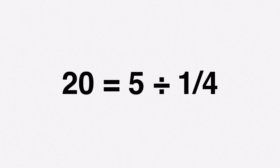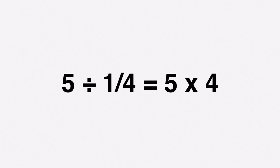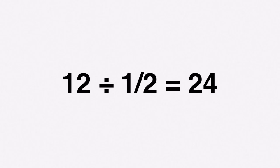Doesn't that sound strange? Normally when we think of division we expect a smaller number — 12 divided by 6 is 2. But when you take 5 wholes and divide into one fourths, you have a lot more than just 5 pieces because each whole is cut into four parts — 4 times 5 gives us 20. Do you notice a pattern? 5 divided by one fourth is the same as 5 times 4. When we divide a whole number by a fraction we are multiplying by the reciprocal of that fraction, so 5 divided by one fourth equals 5 times 4.